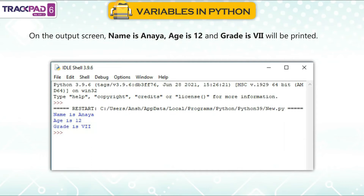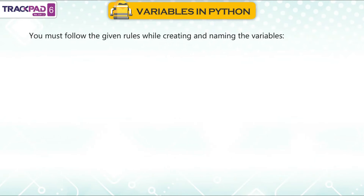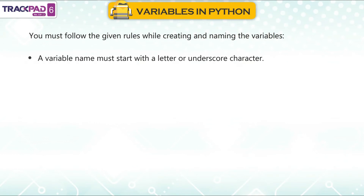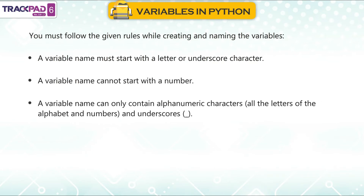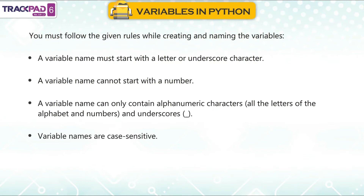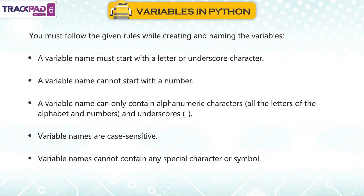Rules for naming variables: A variable name must start with a letter or underscore character. A variable name cannot start with a number. A variable name can only contain alphanumeric characters and underscores. Variable names are case sensitive. Variable names cannot contain any special character or symbol.